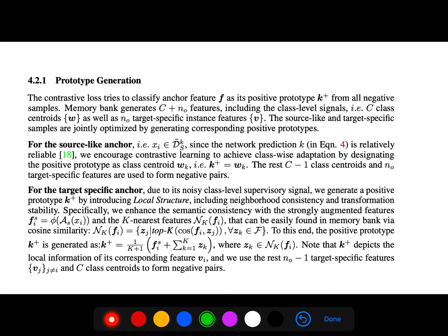The contrastive loss tries to classify the anchor's feature as its positive prototype from all negative samples. The memory bank generates c + n_0 features including class-level signals, for example c class centroids, as well as n_0 target-specific instance features. The source-like and target-specific samples are jointly optimized by generating corresponding positive prototypes.